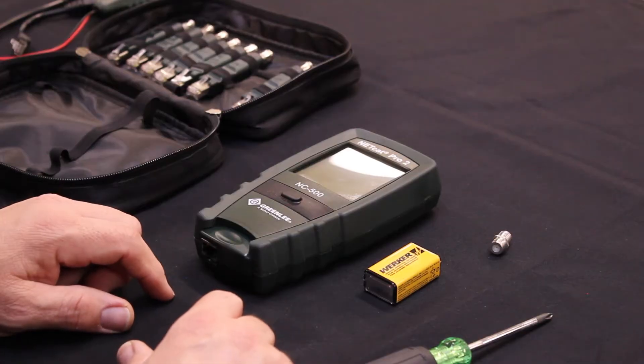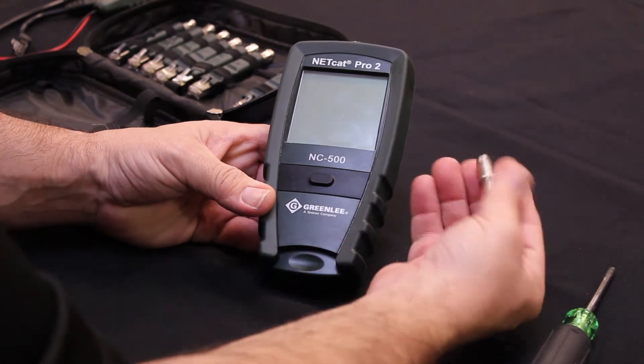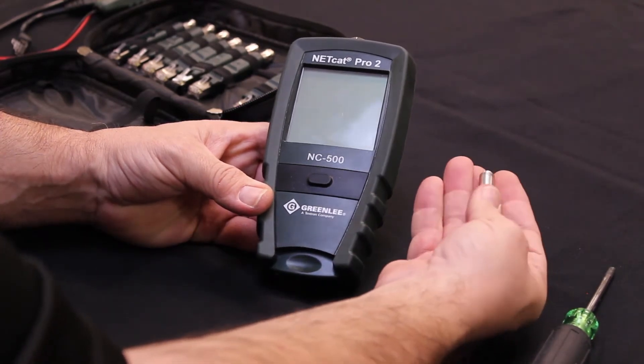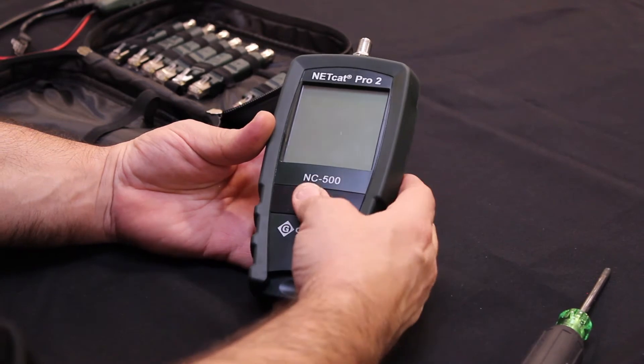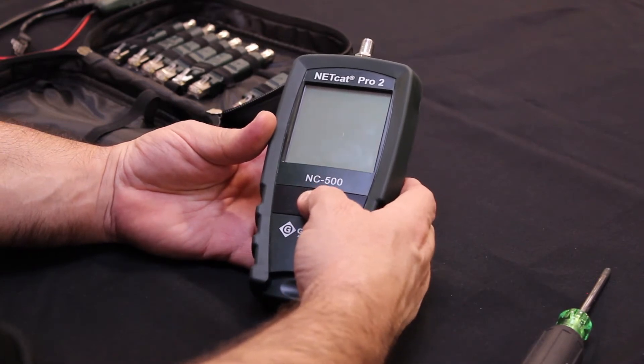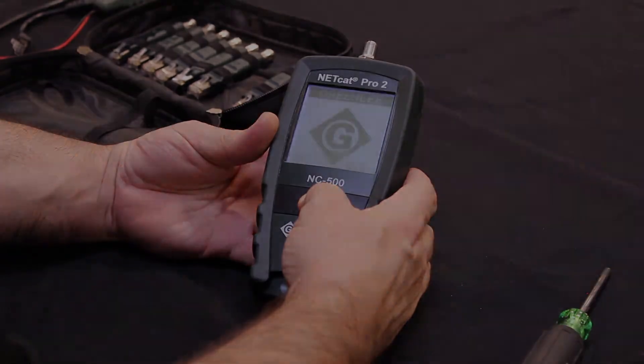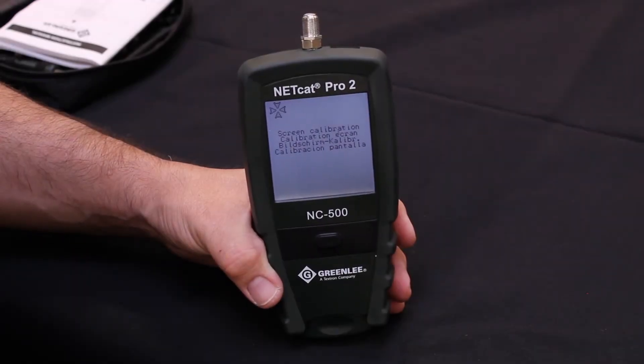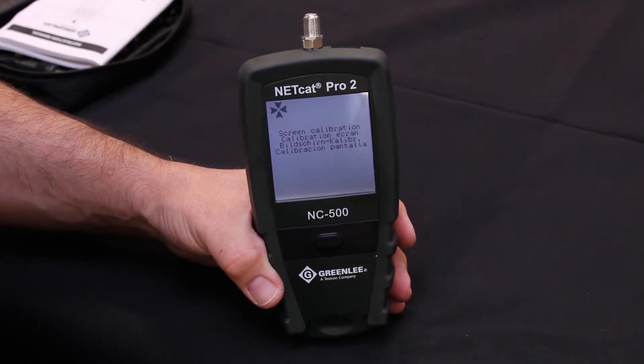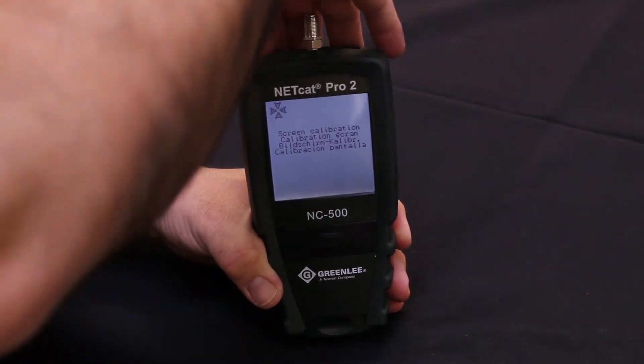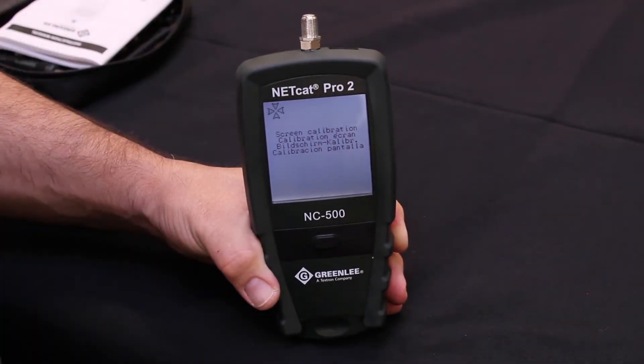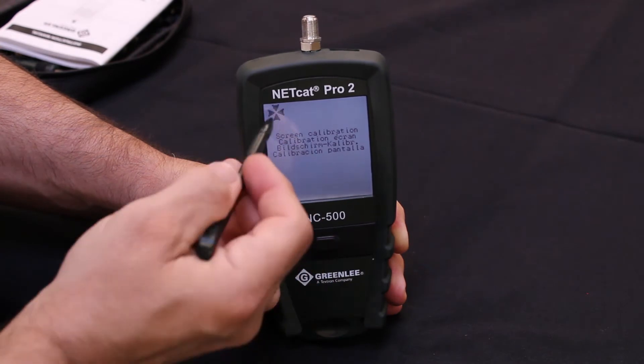First thing that needs to be done is to install the battery in the unit. Next, install the F barrel connector on the top of the unit. To power the NC500 on, press and hold the black button on the front until you hear a beep. The first screen to appear after initial startup is screen calibration. Remove the stylus from the back of the unit and tap the targets until complete.